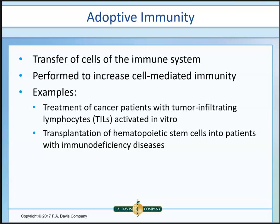Adoptive immunity involves transferring immune system cells into a patient. This increases cell-mediated immunity through T cells — a major approach now used for pancreatic cancer. Tumor-infiltrating lymphocytes are extracted from the patient, activated to target cancer cells, and reintroduced. Stem cell transplants are given to immunodeficient patients — immunocompetent stem cells can produce B cells and T cells, providing some immunity, which is better than nothing.